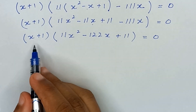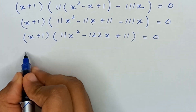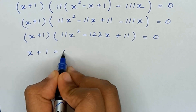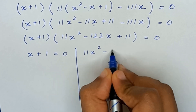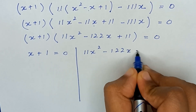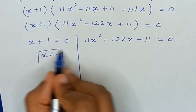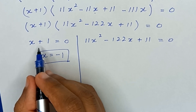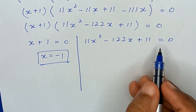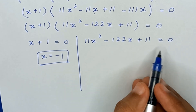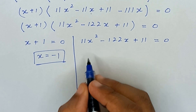From here we have two solutions: x + 1 = 0, and 11x² − 22x + 11 = 0. From the first equation, x = −1. The second is a quadratic equation, so we will solve it by factorization. 11 times 11 is 121, so we take factors of 121.